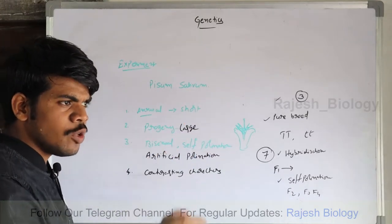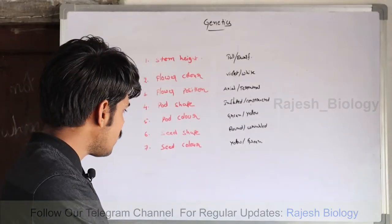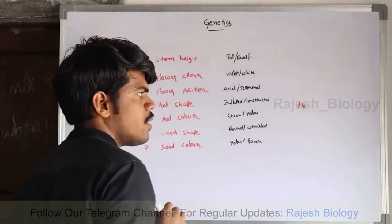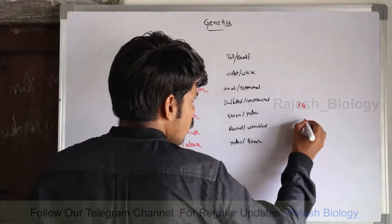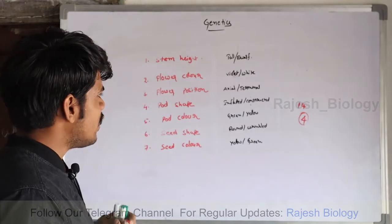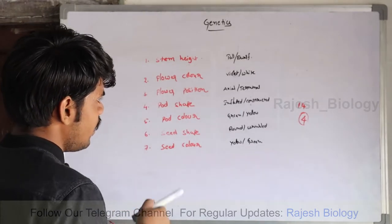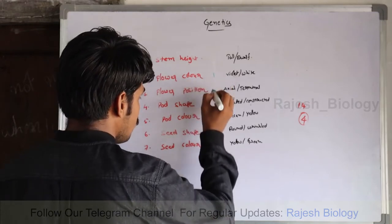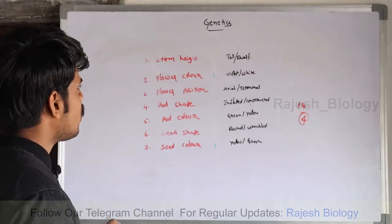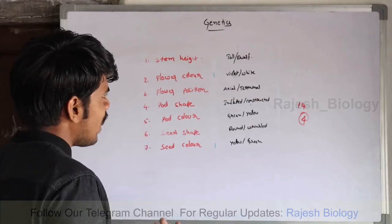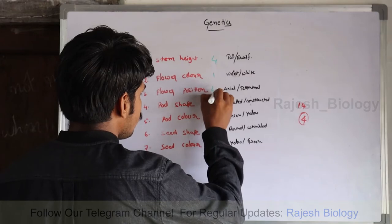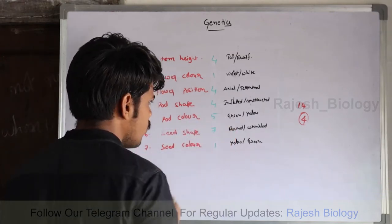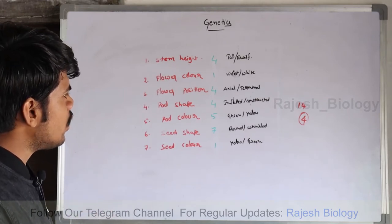Mendel selected these 7 pairs of contrasting characters from the pea plant. Even though Pisum sativum has 14 chromosomes, all these 7 characters are controlled by only 4 chromosomes. Seed color and flower color are both on chromosome number 1. Most of the other characters are under control of chromosome number 4. Pod color is under control of chromosome number 5, and seed shape is under control of chromosome number 7.